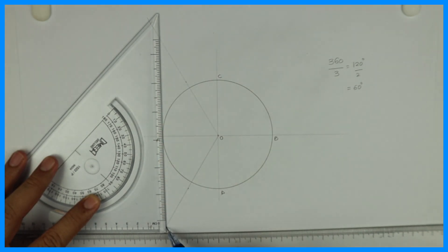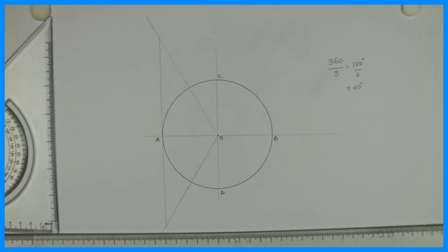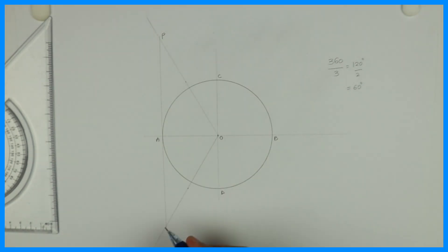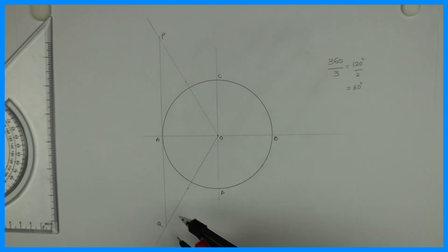After that, you draw tangent from here, see this tangent from A. Then you bisect this angle AQO. See this, so you bisect this angle.